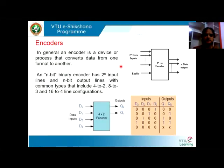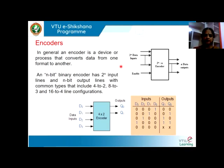Dear students, in today's class let us start with encoders. In general, an encoder is a device that converts data from one format to another format. For example, we have an n-bit binary encoder. It has 2 to the power of n input lines and n number of output lines.